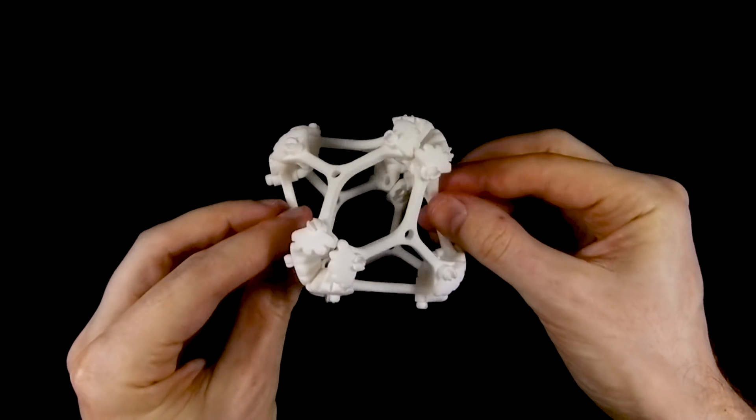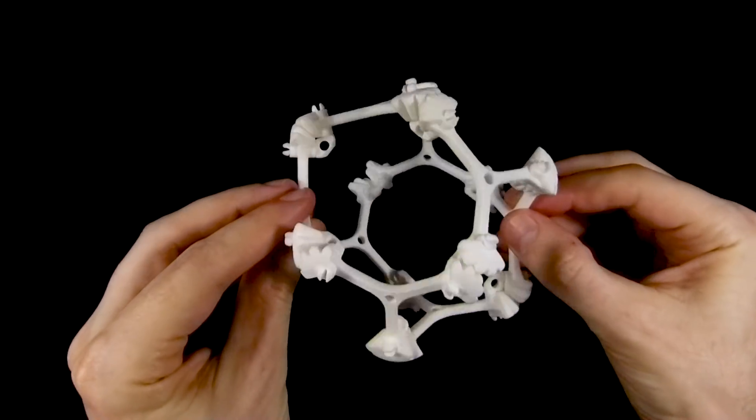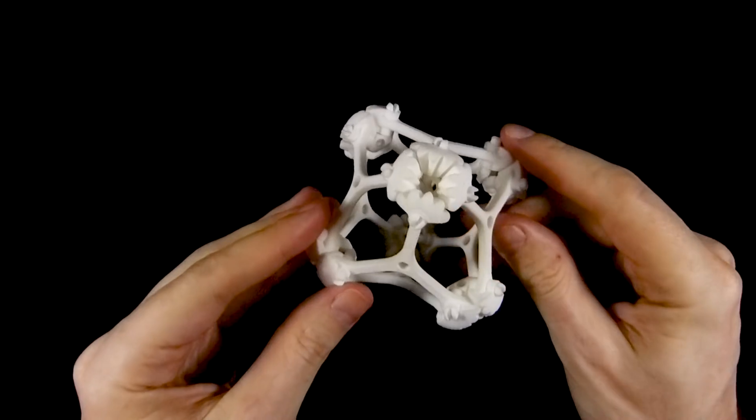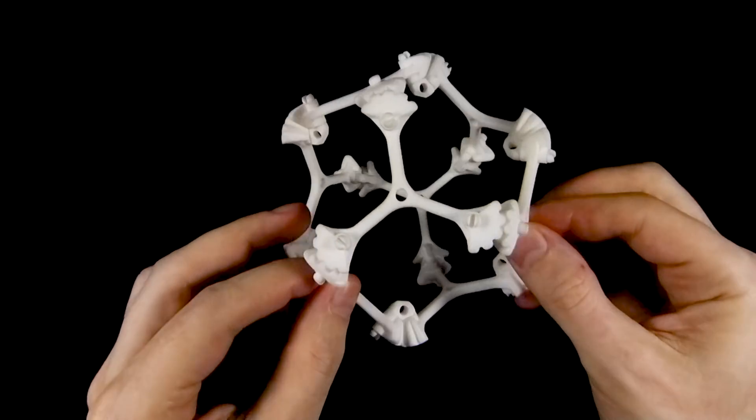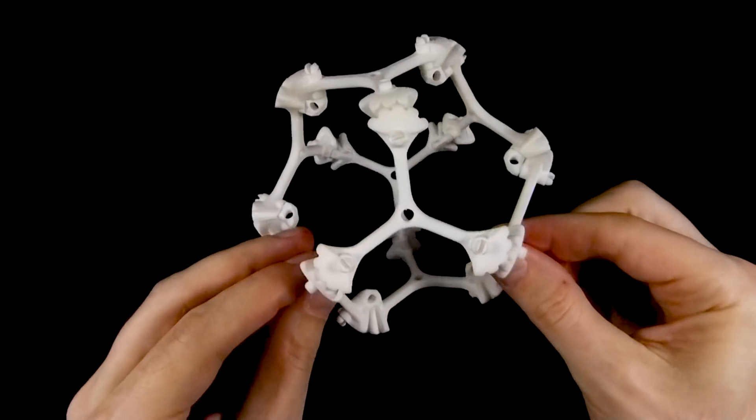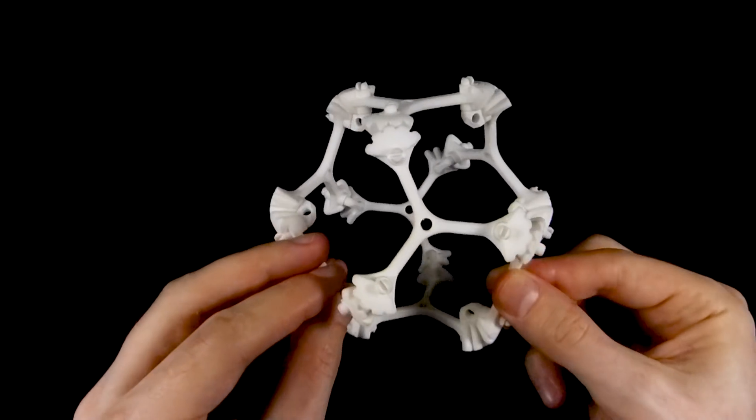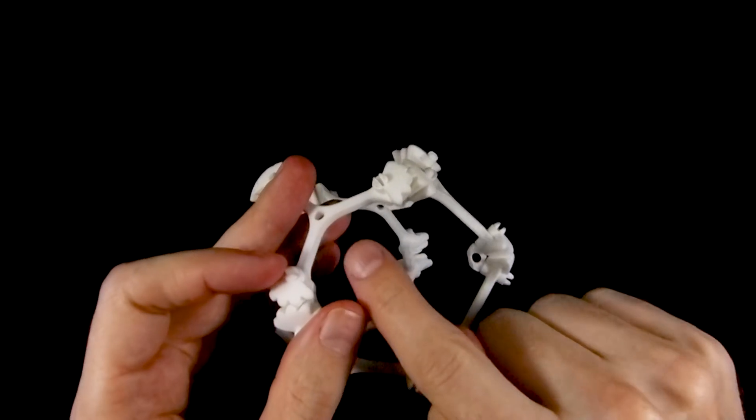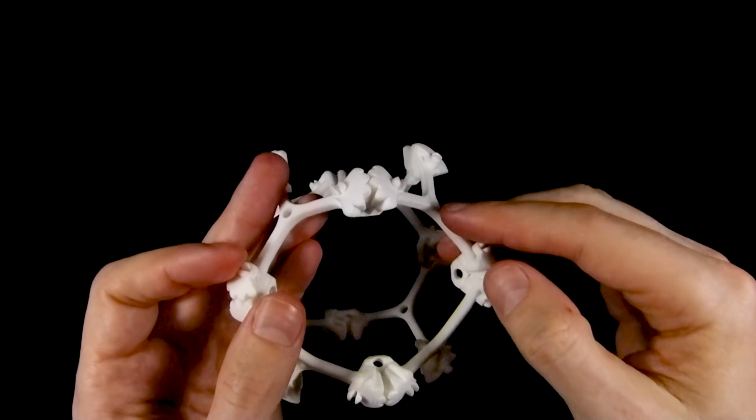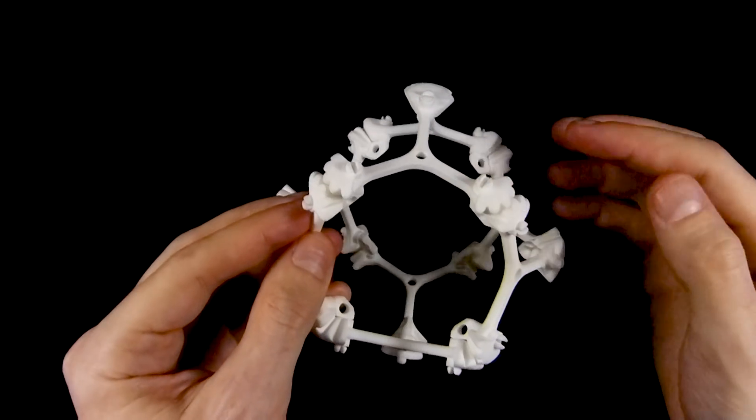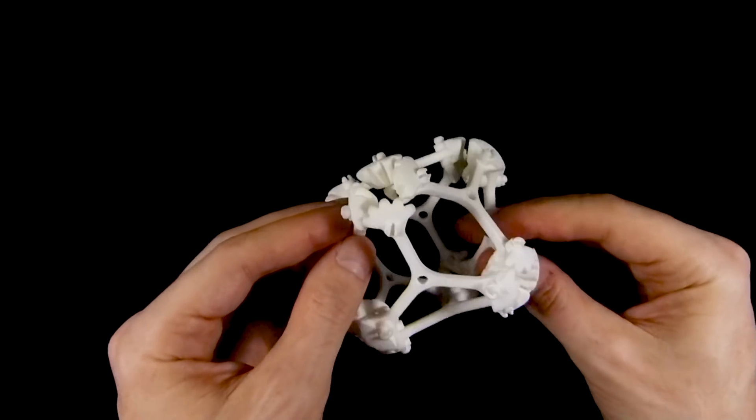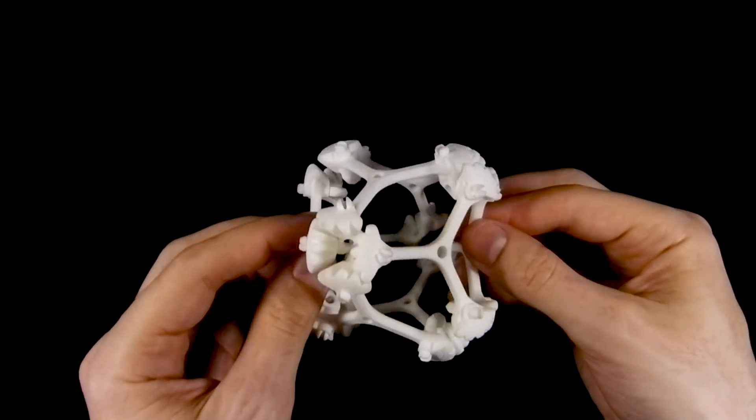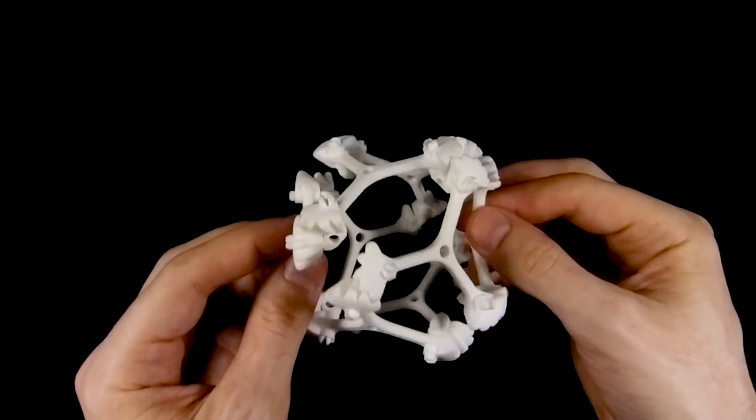So the gears make it work very smoothly. They're not strictly necessary for this mechanism to be one degree of freedom, at least mathematically speaking. Of course, the real world doesn't always cooperate. And what the gears do is that they enforce the angle between this Y and this Y. And so they just keep everything in place a little bit better than if the gears weren't there. And it just makes it all move much more smoothly than it would otherwise do.